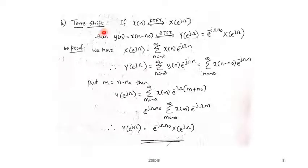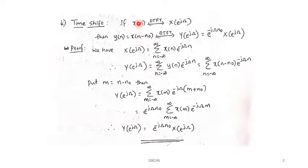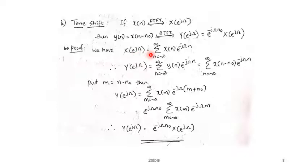Next, we discuss the time shifting property. If I take the shifted version of the input signal, in the frequency domain it will appear as a multiplication factor. If x(n) has DTFT X(e^{j\omega}), and y(n) = x(n − n₀) is the shifted version of x(n), then the DTFT of x(n − n₀) is Y(e^{j\omega}) = e^{-j\omega n₀}·X(e^{j\omega}). To prove this, I again use the definition of DTFT.